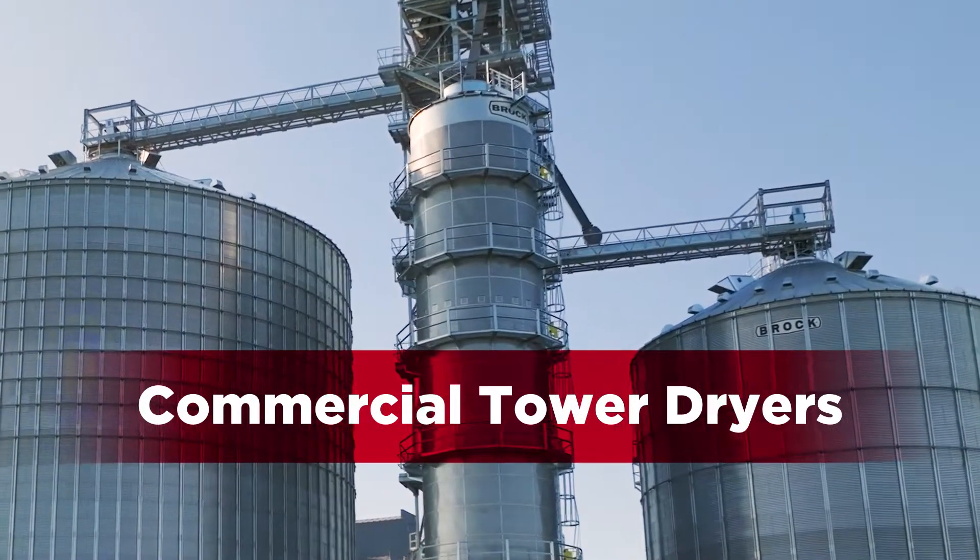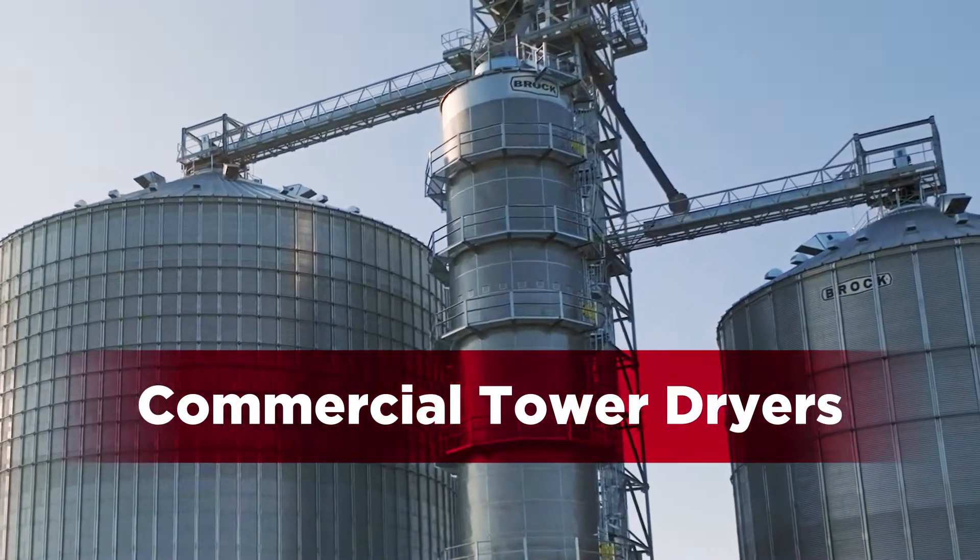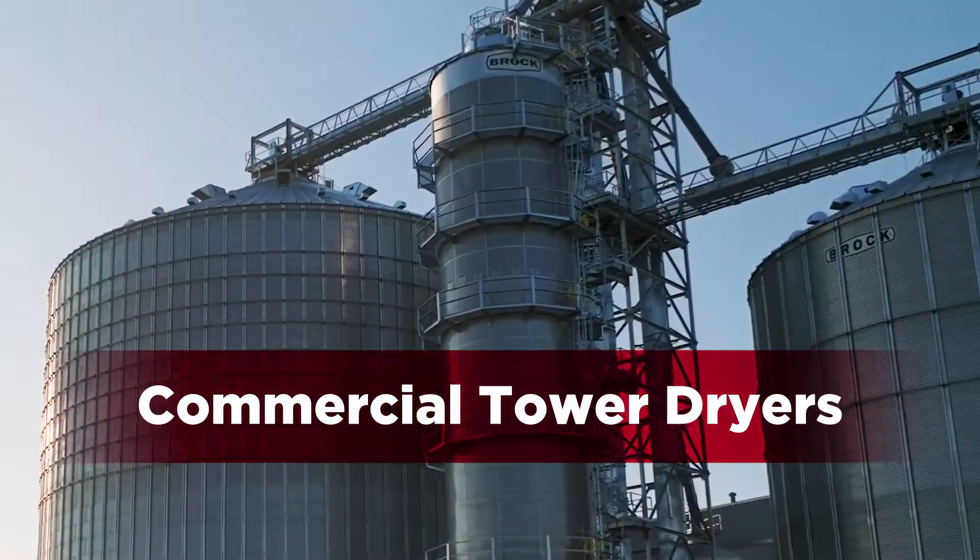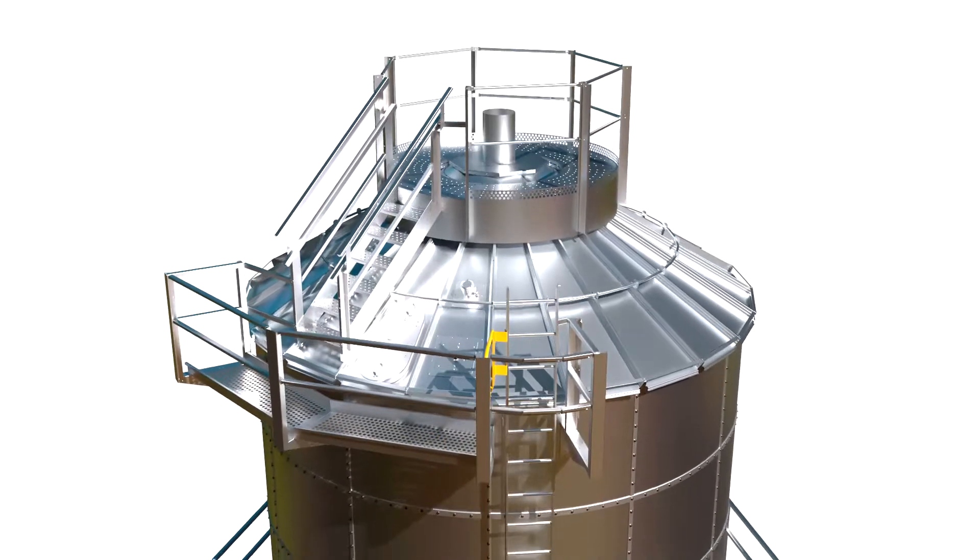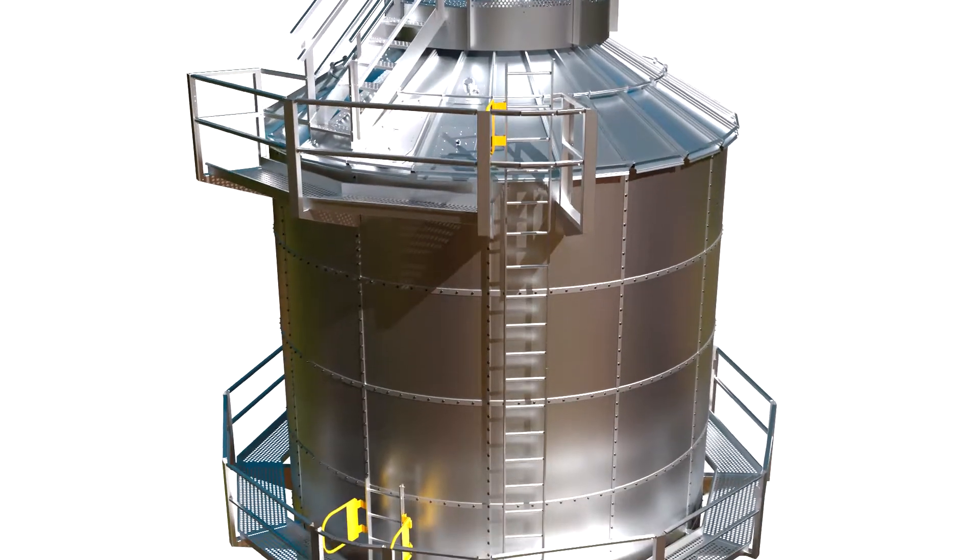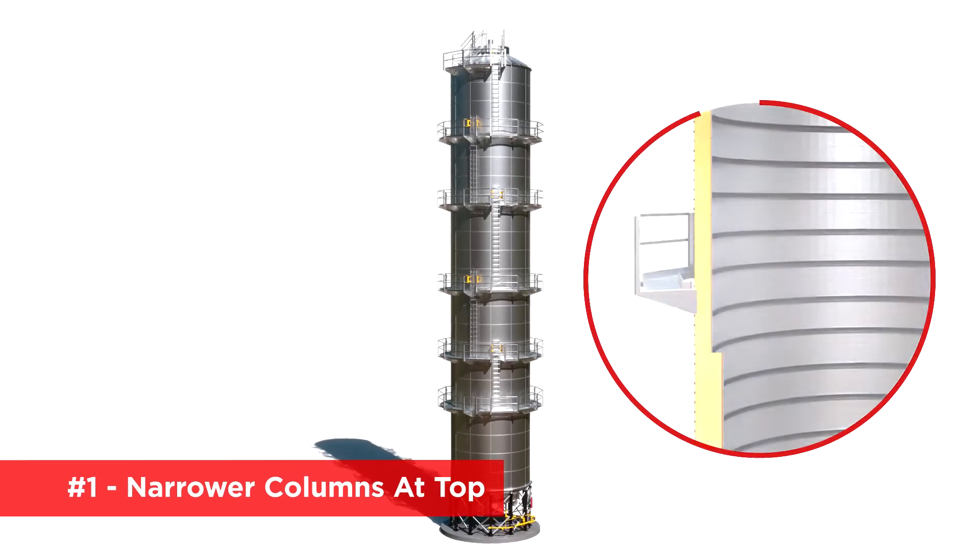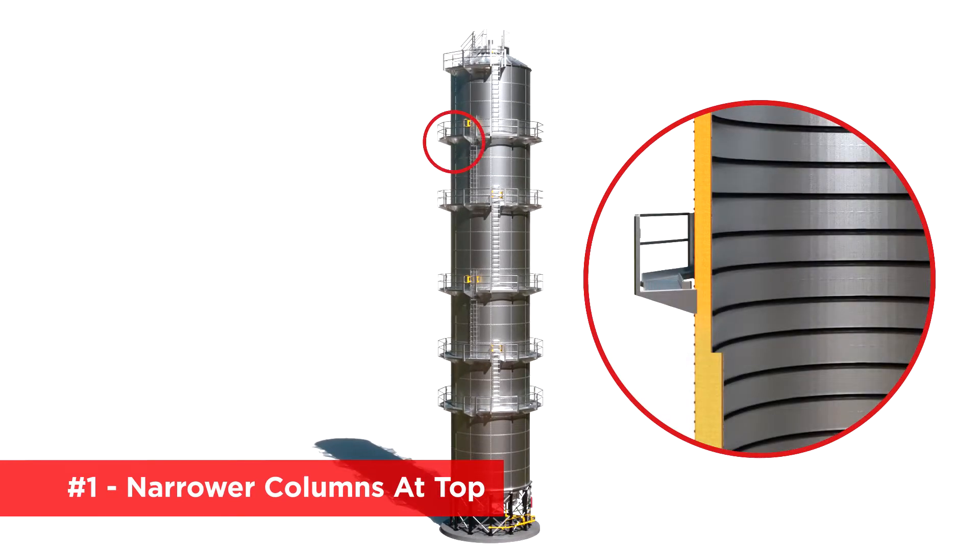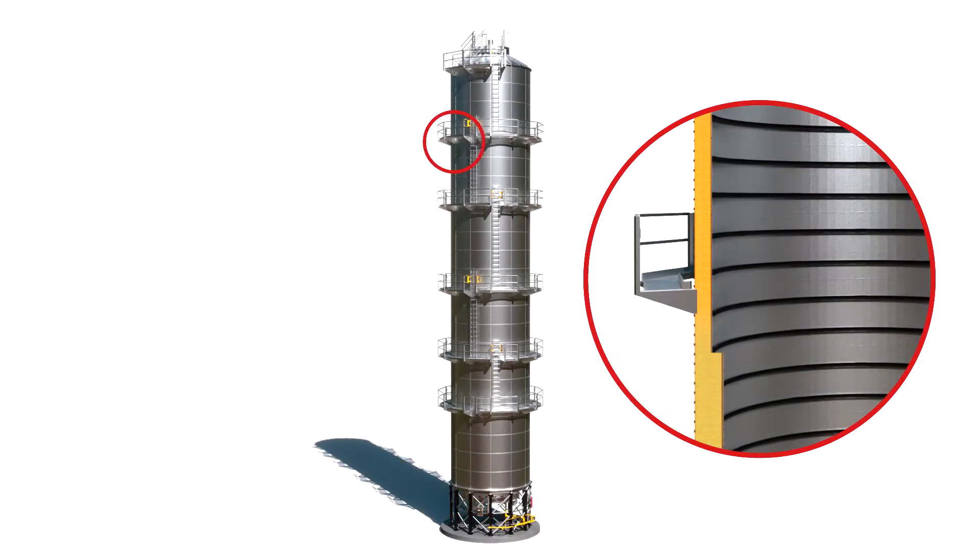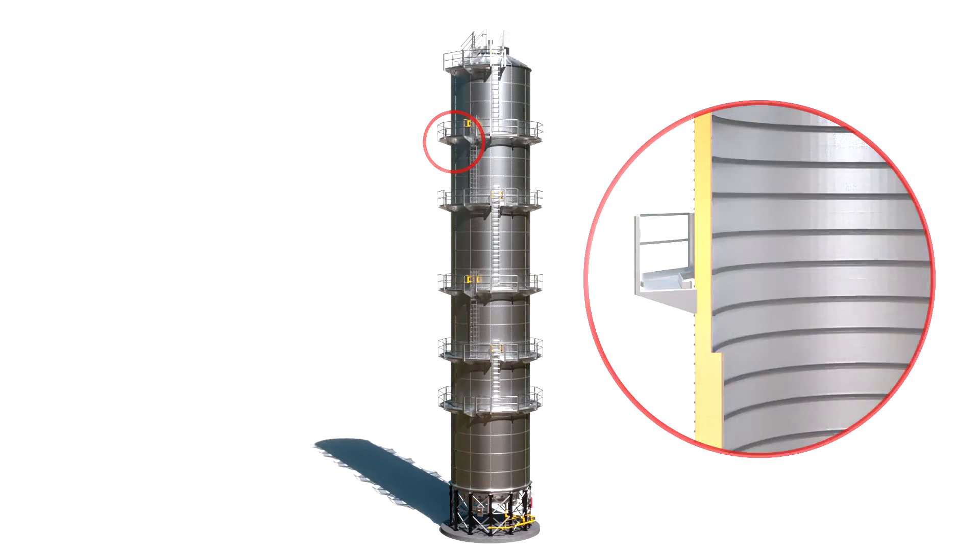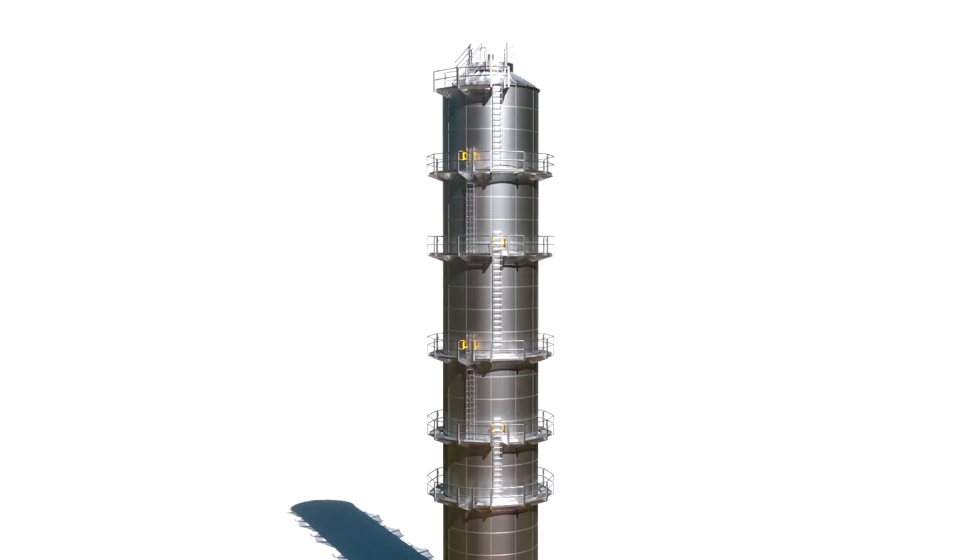Brock commercial tower dryers are different from top to bottom. Here are 10 ways they dry grain better, including revolutionary moisture sensing technologies and other dryer control advances. Narrow width grain columns at the top of the dryer increase airflow up to 100 cubic feet per minute or higher to start the drying process on the wettest grain sooner. As the grain column widens out, airflow is reduced by approximately 30% for gentle, consistent drying with maximum efficiency.